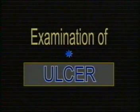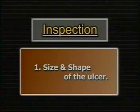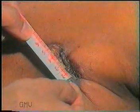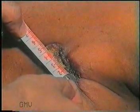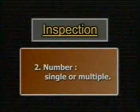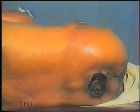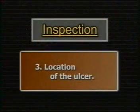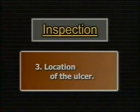On examination of an ulcer, first note the size and shape of the ulcer and measure the size in centimeters in two dimensions with a measuring tape. Then note the number — whether it is a single ulcer or are there similar ulcers elsewhere on the body. Now note the exact anatomical location of the ulcer, as many ulcers have a characteristic site where they occur.